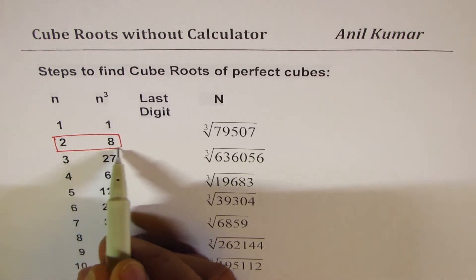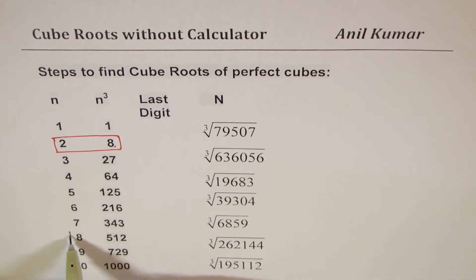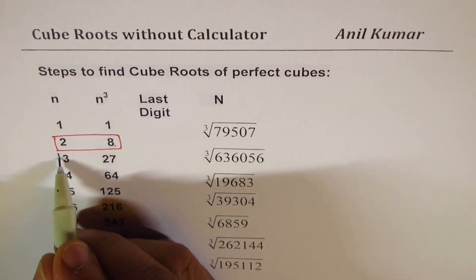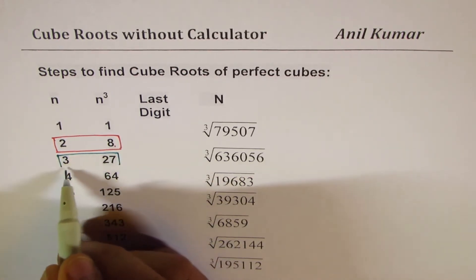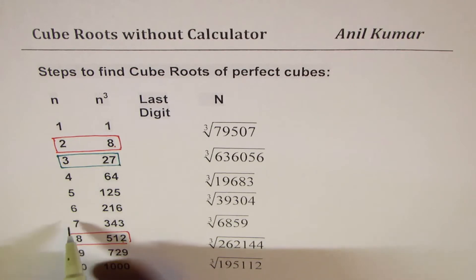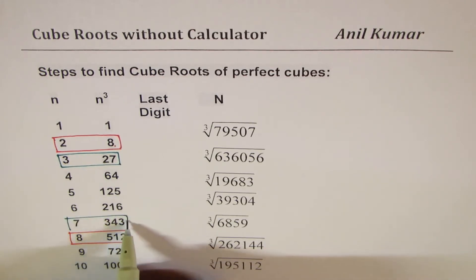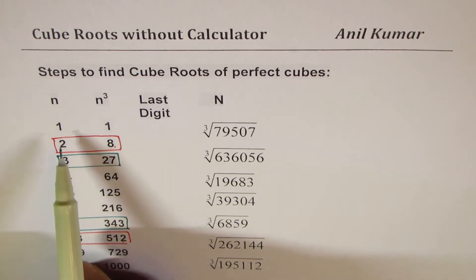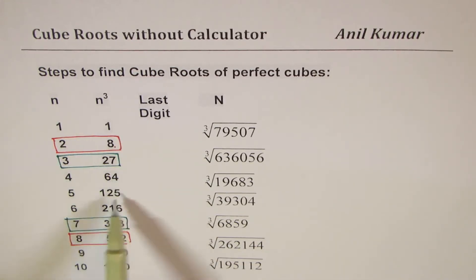Similarly for 8 the last digit is 2. Do you see that? So that is flipped. We also have a flip for 3 and 7. For 3 the last digit is 7, similarly for 7 the last digit is 3.